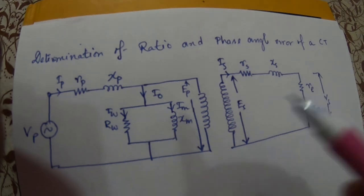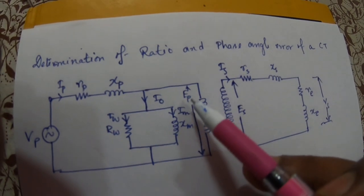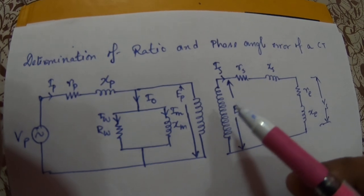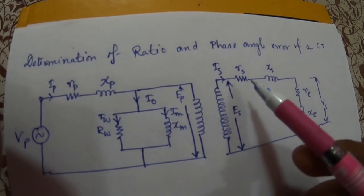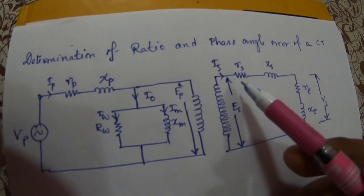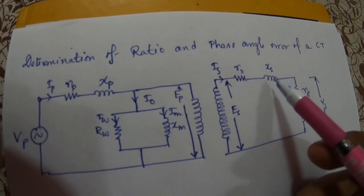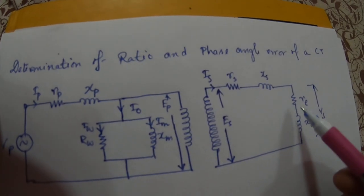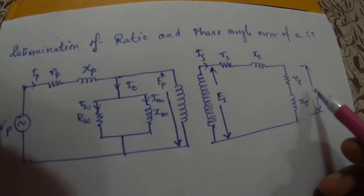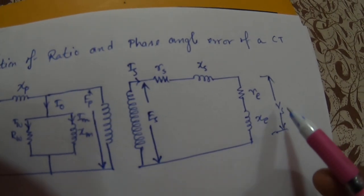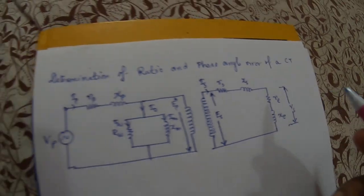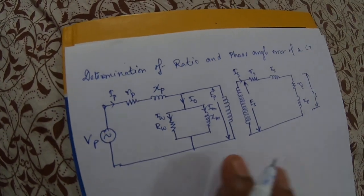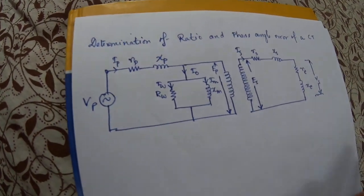Im flows through Xm. This is the primary side induced voltage, capital E suffix P, and the secondary side induced voltage is capital E suffix S. Is is the secondary side current; Rs and Xs are the secondary side resistance and reactance. Re and Xc are the resistance and reactance of the load side, and Vs is the secondary side voltage.